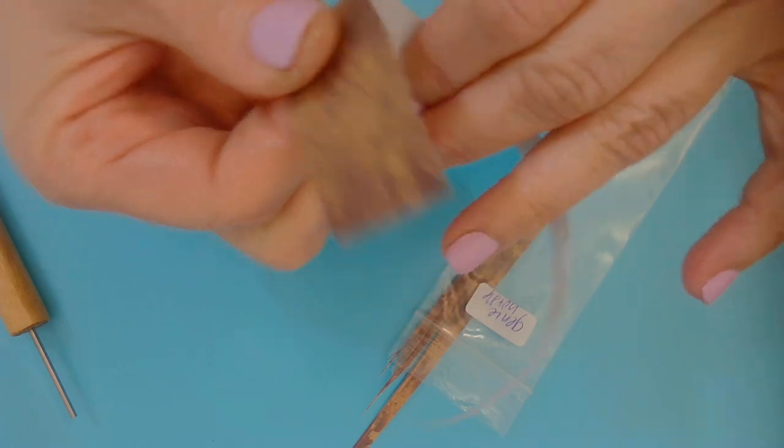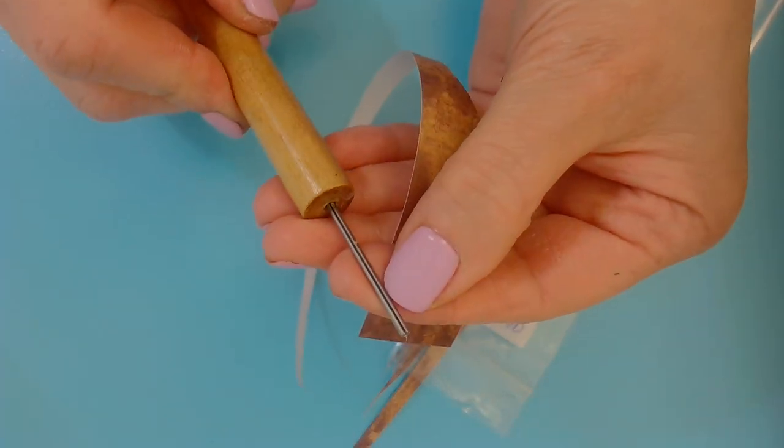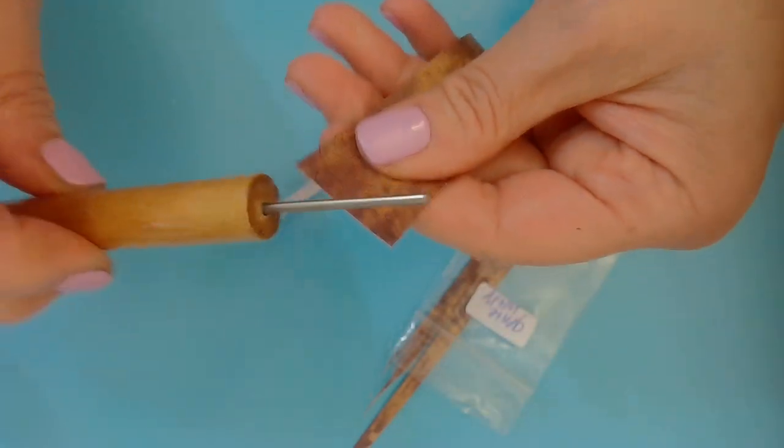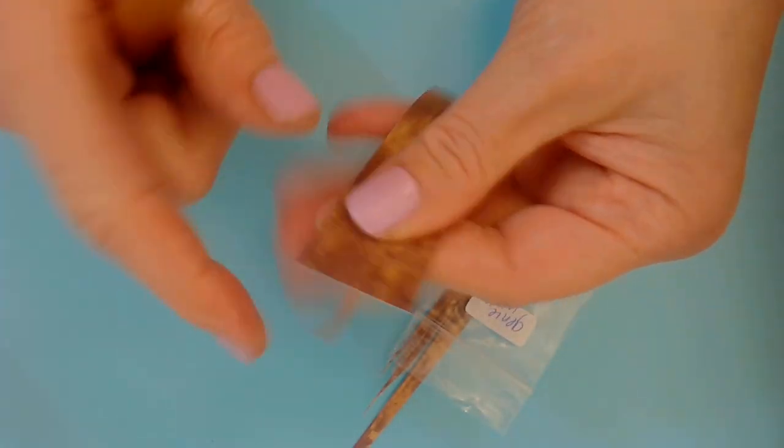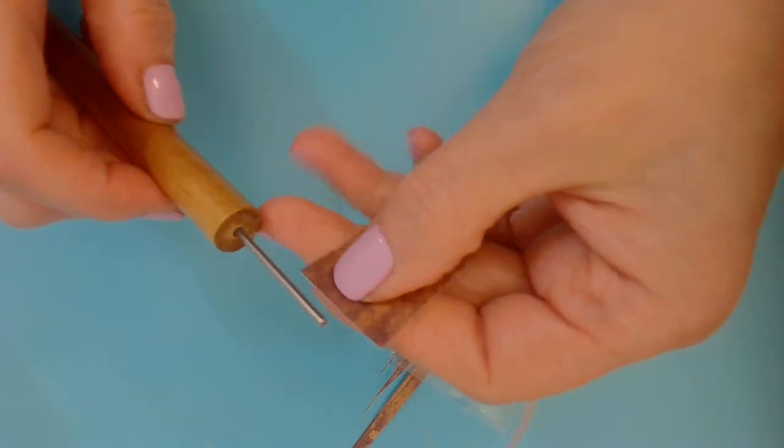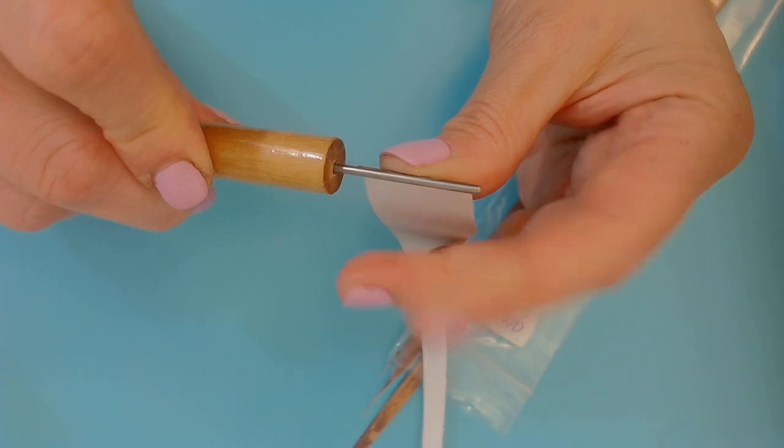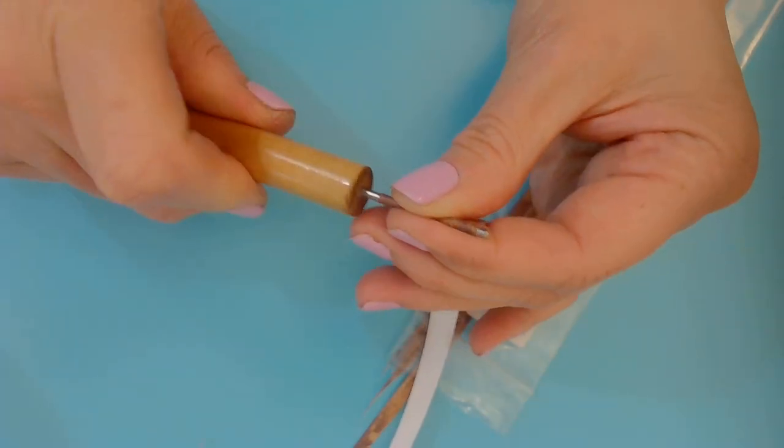All right, so there we go. You want to grab your paper bead roller. There's a little slot in the pin. You want to get the widest angle of your paper bead strip and slide that right in there. Now I usually have it rest on my index finger, and my thumb is guiding it towards the center.